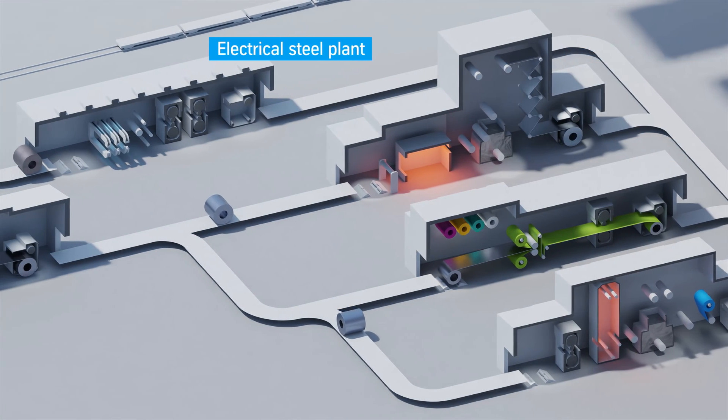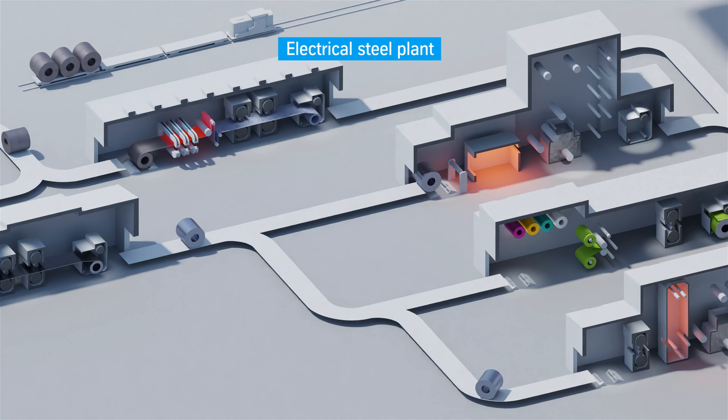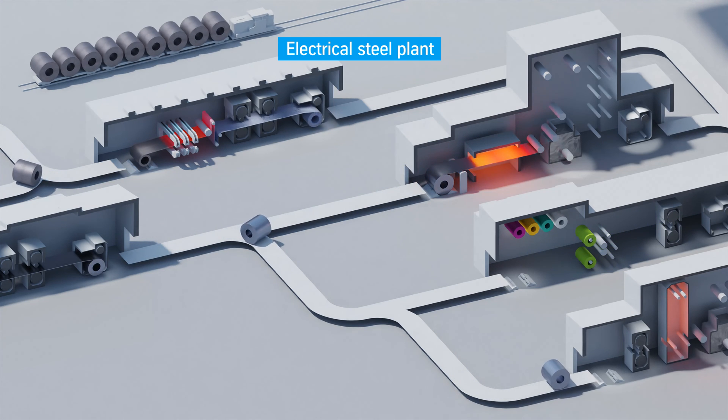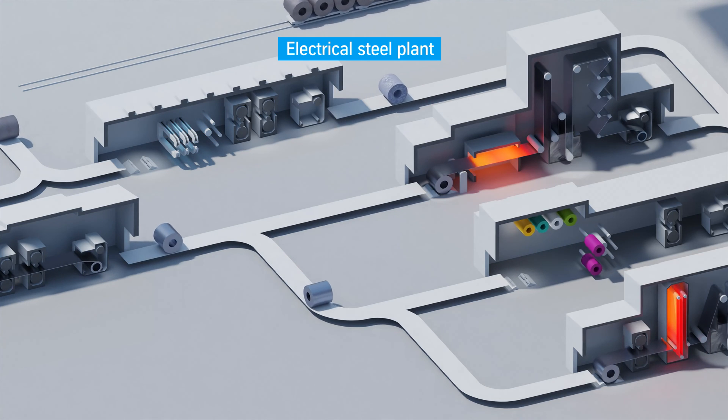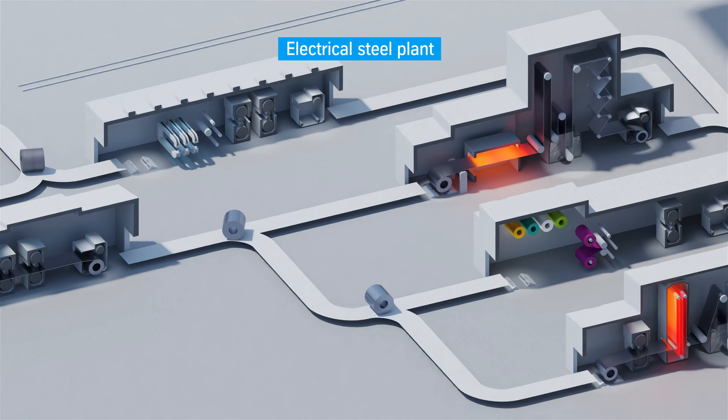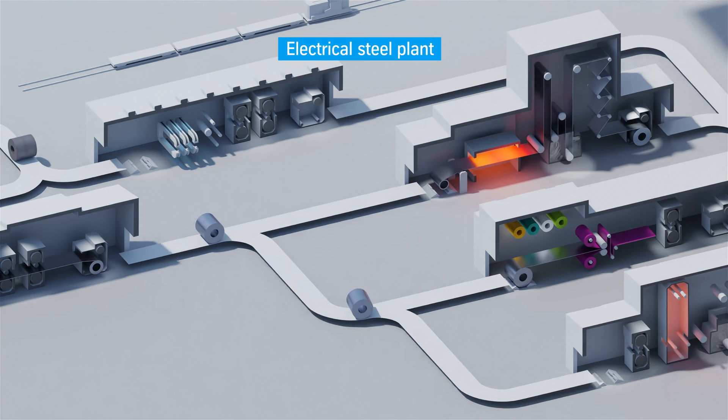In the electrical steel plant, hot strips are processed into electrical steel, an indispensable material for electric motors and generators. They are also used, for example, for transformers' energy supply systems. From a technological point of view, steel is essential for the energy transition.